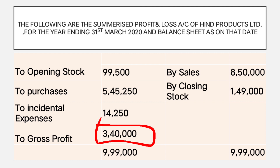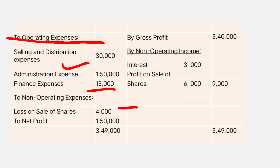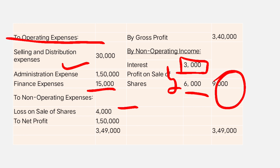The gross profit is 3,40,000. In the profit and loss account, operating expenses are: selling and distributional expenses 30,000, administration expense 1,50,000, finance expense 15,000. Non-operating expenses: loss on sale of shares 4,000. Non-operating income: interest 3,000 and profit on sale of shares 6,000, totalling 9,000.